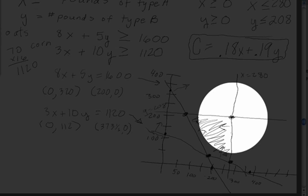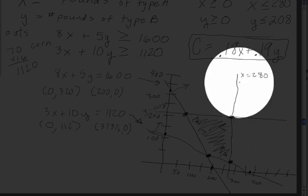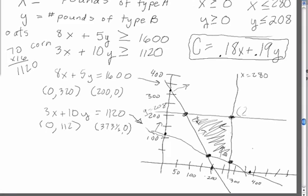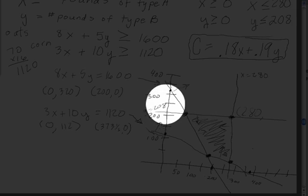This one is pretty easy because we know that this x value here, anything on this line is 280. And the y coordinate that goes with it, we go over here, is 208.